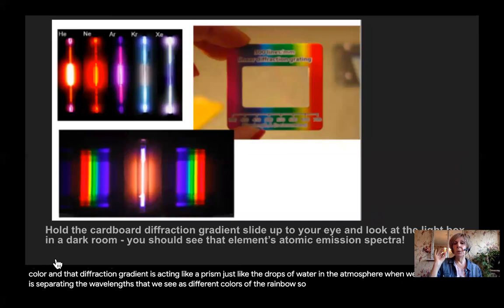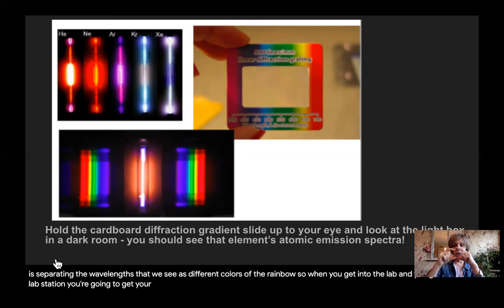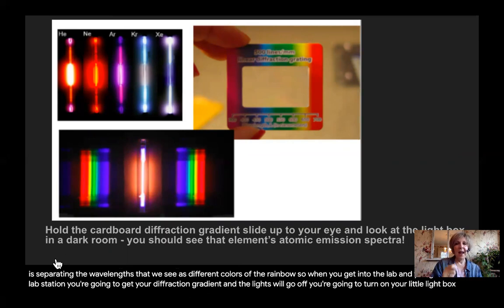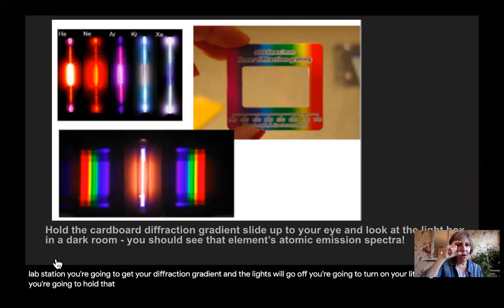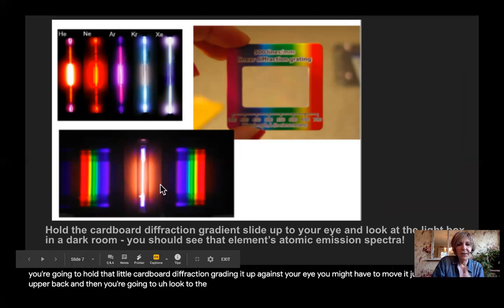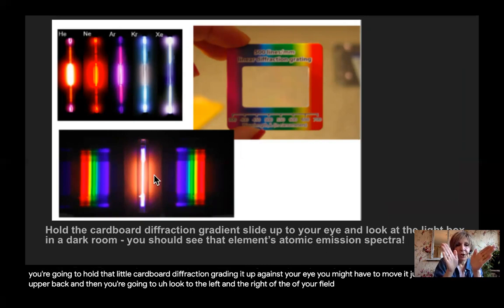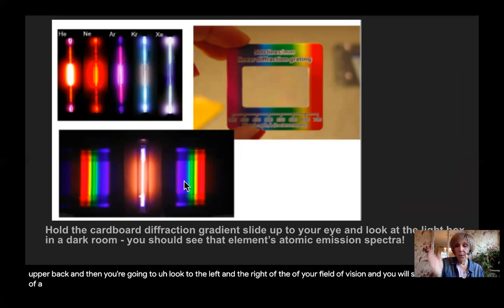So when you get into the lab and you get to each lab station, you're going to get your diffraction gradient and the lights will go off. You're going to turn on your little light box and you're going to hold that little cardboard diffraction gradient up against your eye. You might have to move it just a little bit up or back and then you're going to look to the left and the right of your field of vision and you will see mirror images of a color pattern.